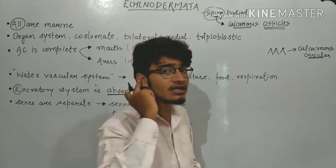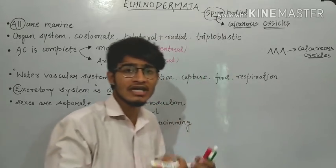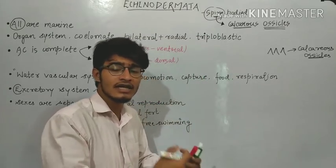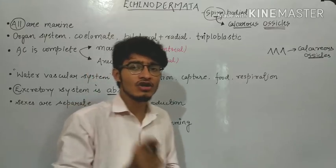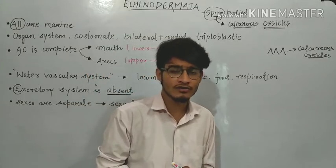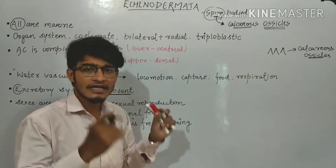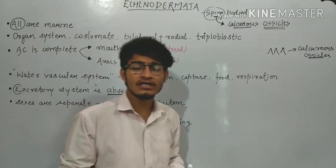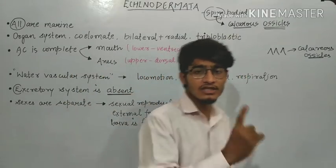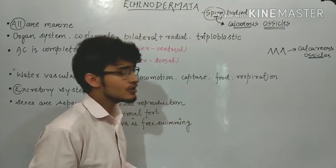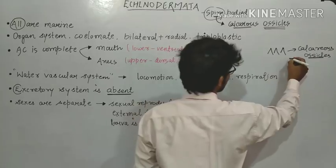Ossicles simply means tiny bone-like structures. For example, there are three ear ossicles in our ear: Malleus, Incus, and Stapes. Stapes is the smallest bone of the human body. Similarly, calcareous ossicles are present in the body of echinoderms, forming their endoskeleton.